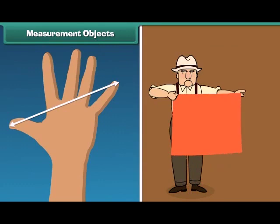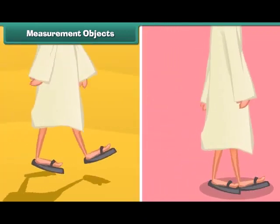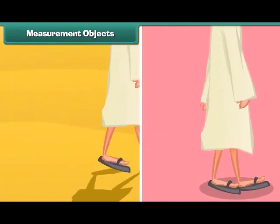Objects can be measured in different ways. You may use your hand span or your arm. You can even use your step for measurement, or simply your feet can be used for measuring distance. All these can be used to measure lengths.